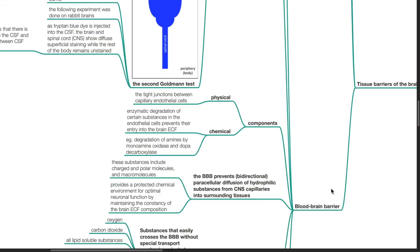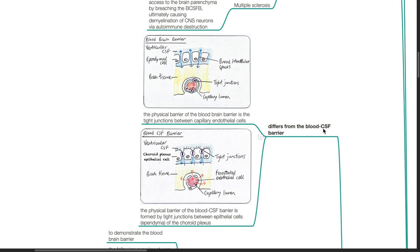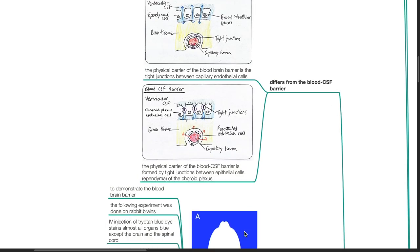The blood-brain barrier. It differs from the blood CSF barrier. The physical barrier of the blood-brain barrier is the tight junctions between capillary endothelial cells, whereas the physical barrier of the blood CSF barrier is formed by tight junctions between epithelial cells of the choroid plexus.